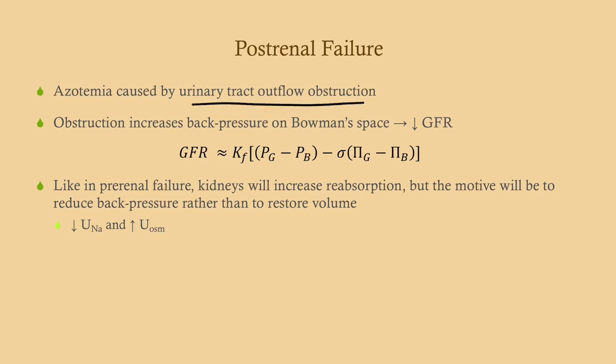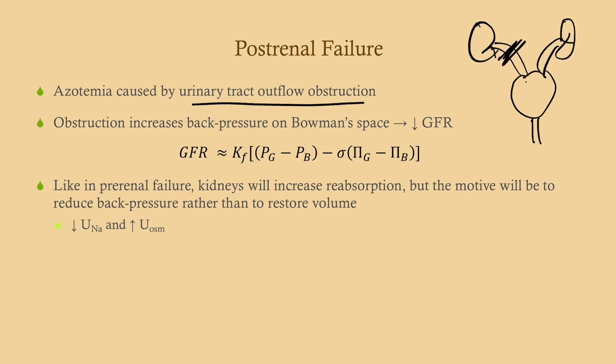Post-renal failure is due to urinary tract outflow obstruction. We have the kidneys, ureters going to the bladder, and a urethra that expels urine. You can have an obstruction at the ureter, but in order to cause post-renal failure it needs to be bilateral, because one kidney can compensate for the other. A unilateral obstruction would cause hydronephrosis on the affected side.